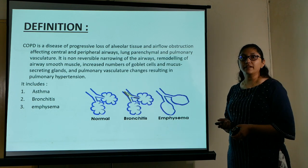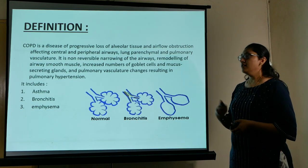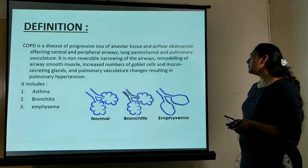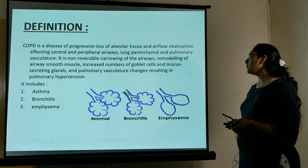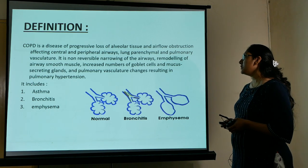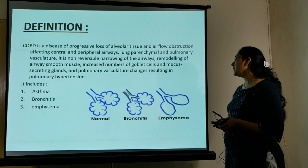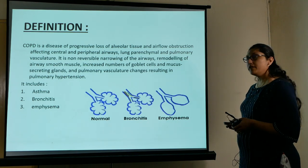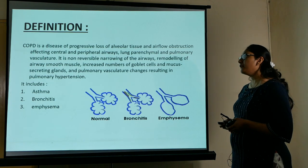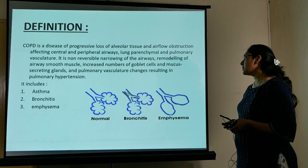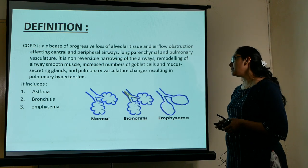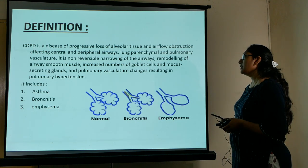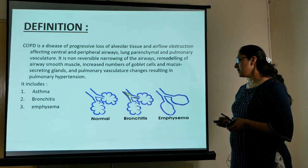The most common respiratory disorder in anesthesia is COPD. It causes progressive loss of alveolar tissue and airflow obstruction, affecting both central and peripheral airways, lung parenchyma, and pulmonary vasculature. It involves non-reversible narrowing of airways, remodeling of airway smooth muscle, increased numbers of goblet cells and mucus-secreting glands, and pulmonary vasculature changes resulting in pulmonary hypertension. It includes asthma, bronchitis, and emphysema.